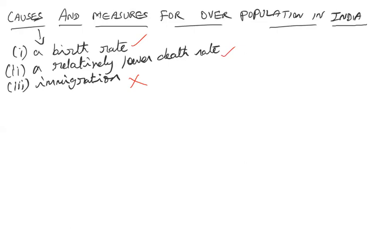Another reason that could cause a sizable increase in population is immigration — people immigrating from one country to another. But as far as India is concerned, we need not worry about immigration. The problem of overpopulation in India is mainly because of the high birth rate and relatively low death rate.